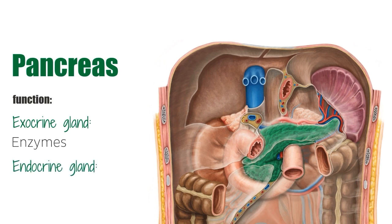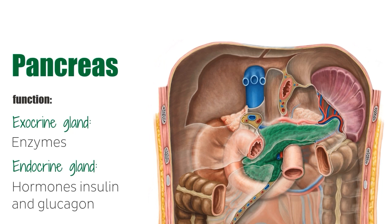When it functions as an endocrine gland, the pancreas secretes hormones such as insulin and glucagon into the blood in order to control blood sugar levels throughout the day.